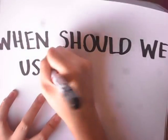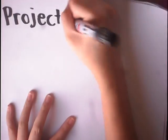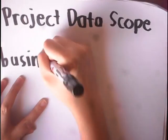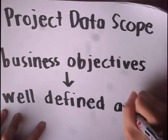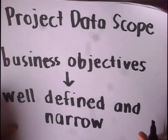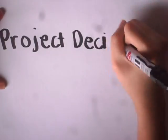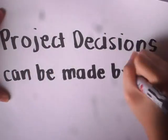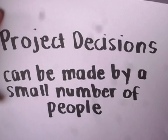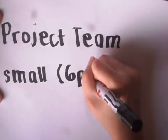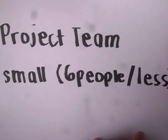When should we use RAD? The project is suitable for RAD if it has a focused scope where the business objectives are well defined and narrow, and if decisions can be made by a small number of people. The project team must be small, preferably 6 people or less.